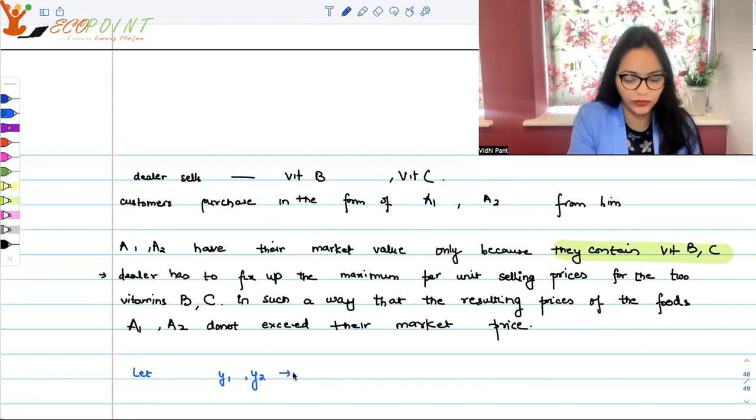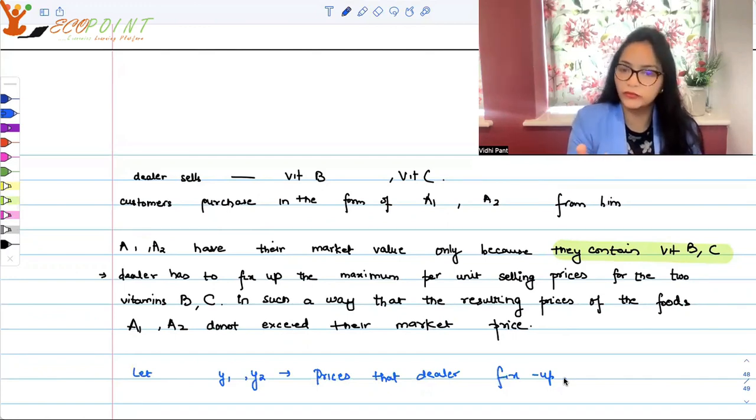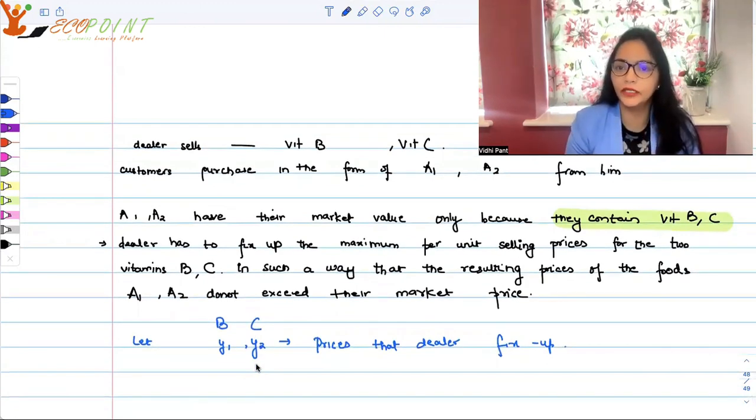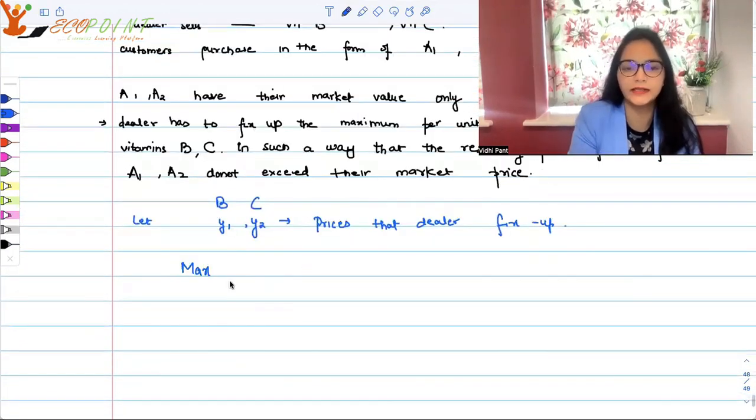This scenario basically boils down to, mathematically, agar ham is problem ko banaye, to ab kya ho jayega? Suppose, let's say, let y1, y2 be the prices that the dealer fixes up. The dealer decides to fix up y1, y2, the price of the vitamins, vitamin B and C. That means he would want to maximize what he can earn out of it, right? The situation would now turn into maximizing.